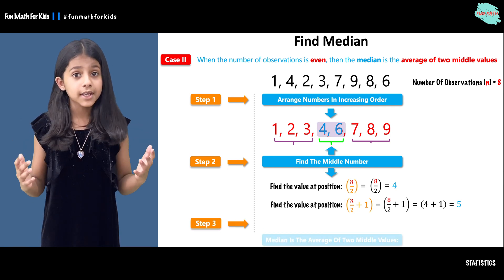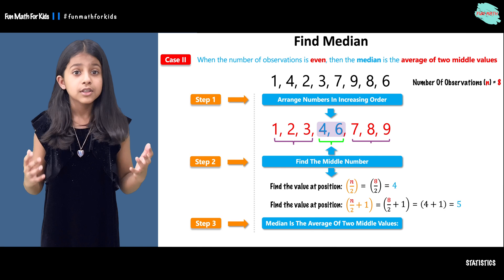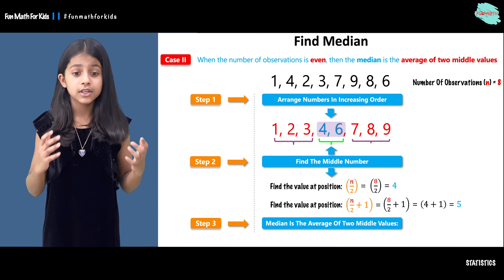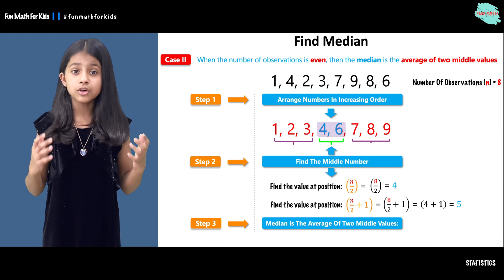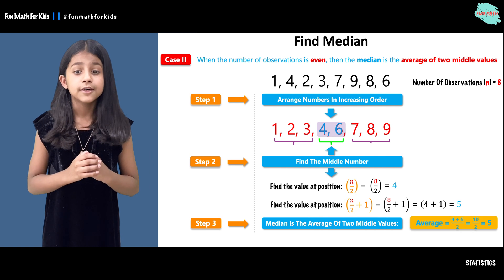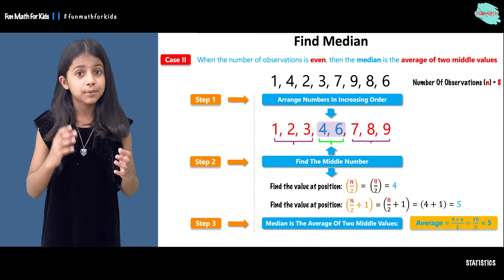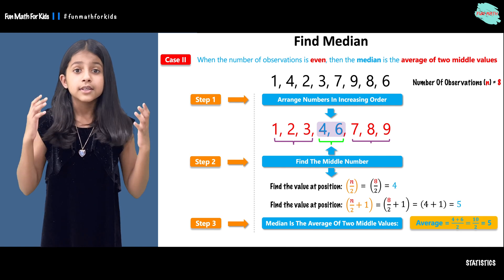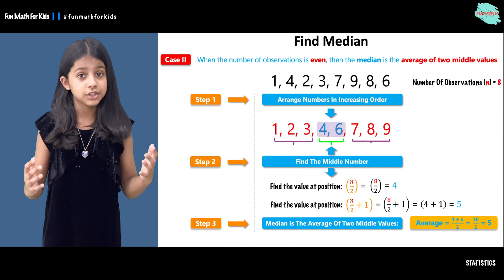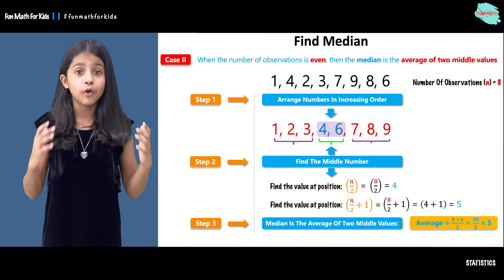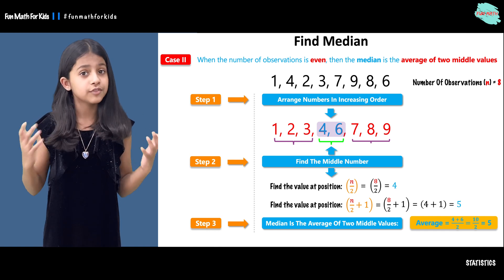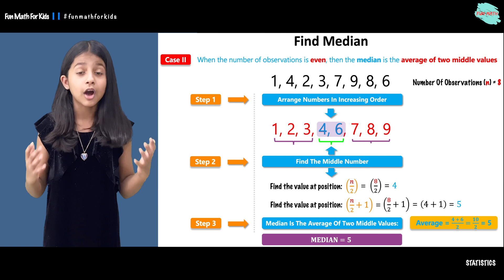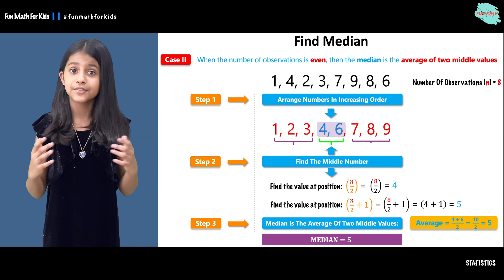In step three, you will find the median as the average of the two middle values. Four plus six over two is ten over two, which equals five. So that is why our median is five.